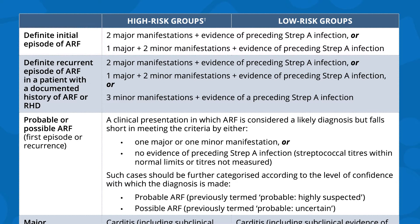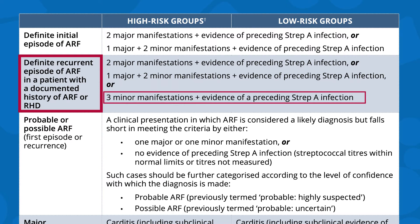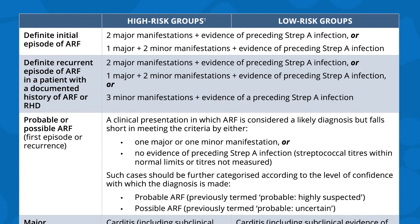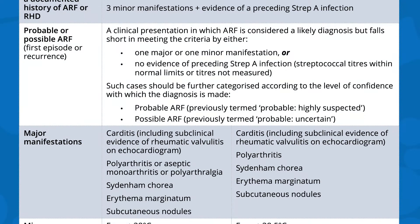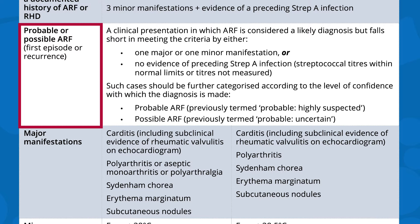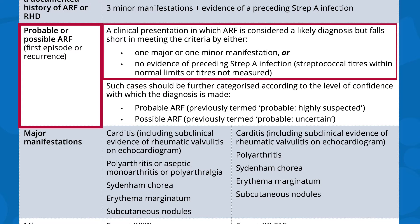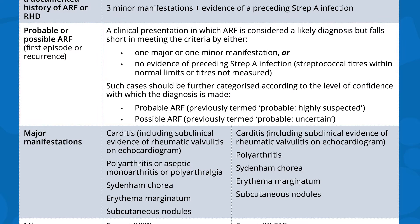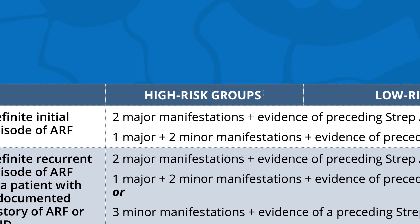If a person has already had ARF, the threshold for diagnosis of a recurrent episode is lowered slightly to include three minor manifestations plus evidence of a Strep A infection. Due to the variety at which people can present with ARF and the lack of access to some tests, there are additional categories of possible and probable ARF. These are used when evidence of a Strep A infection or one of the manifestations is missing and when there is no likely alternate diagnosis. The manifestations described here are based on people at high risk, because they make up over 90% of ARF in Australia.